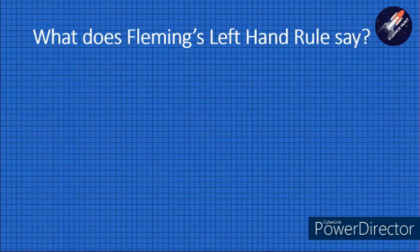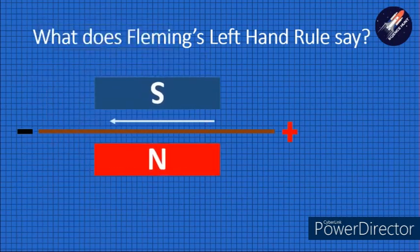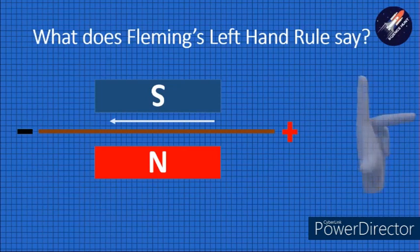Let's take another example. As we see here, the conventional flow of current here is towards the left-hand side. Let's bring the permanent magnet. Here, we can see the direction of the magnetic field north to south is upwards.